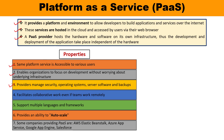PaaS manages the operating system, security, runtime, virtualization, server, storage, and networks — everything. It facilitates collaborative work: even if team members are working from remote locations, they can collaborate and work in coherence. PaaS supports multiple languages and frameworks, which is a key feature. It also provides the ability to auto-scale — automatic scaling is an important feature. Companies providing PaaS include AWS Elastic, Azure App Services, Google App Engine, and Salesforce.